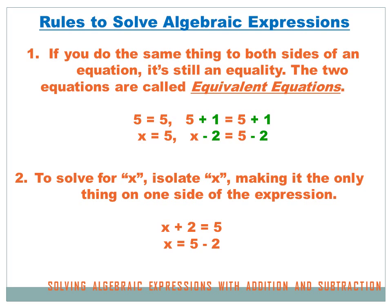Here's another example and this one's got a variable in it. x equals 5. This time I'm going to subtract 2 from both sides of the equation, and as long as I do the same thing to both sides it's still an equation. So x minus 2 equals 5 minus 2, if x equals 5. Rule number 2: to solve for x, isolate x, making it the only thing on one side of the equation. You're trying to reduce the equation to x equals something. So if I've got x plus 2 equals 5, I want to change it so it says x equals 5 minus 2.